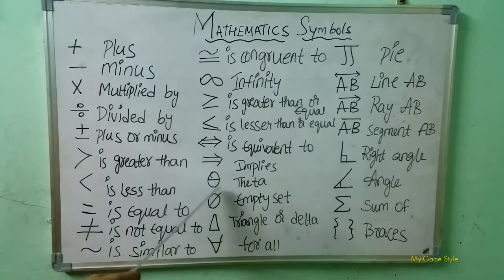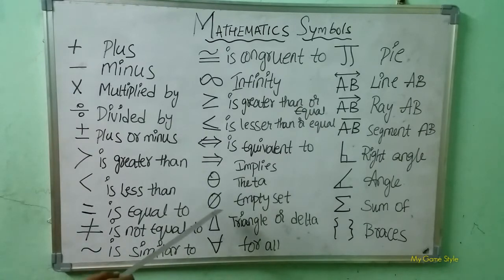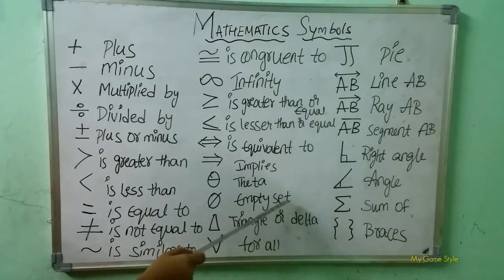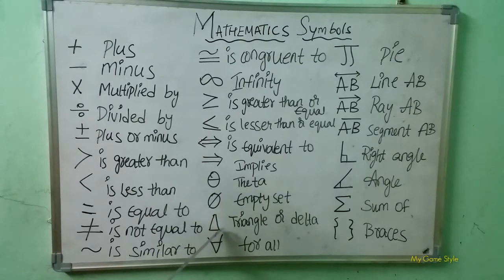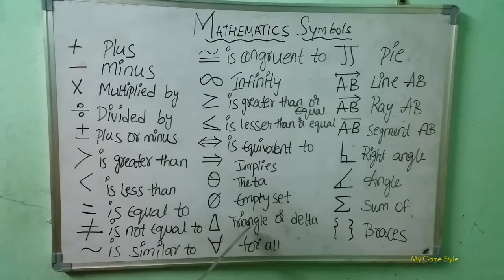Here what is this? Theta — this is called theta symbol. Next, here what is this? This is an empty set symbol. Next, here what is this? Which shape is this? Triangle — we call it triangle or delta symbol.